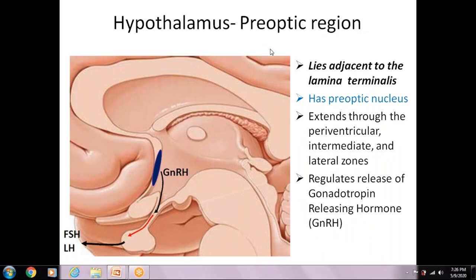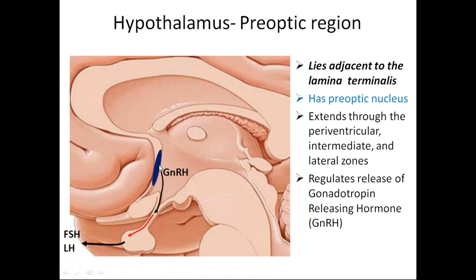Next, the supraoptic region is located above the optic chiasma and has four nuclei. The first nucleus directly above the optic chiasma is the suprachiasmatic nucleus, whose main function is to regulate circadian rhythm — the sleep and wake cycle. The anterior nucleus controls and regulates body temperature, mainly through cooling mechanisms in response to heat. The supraoptic nucleus secretes antidiuretic hormone (vasopressin). The paraventricular nucleus releases oxytocin and is connected to the posterior lobe of the pituitary gland through the hypothalamohypophysial tract.